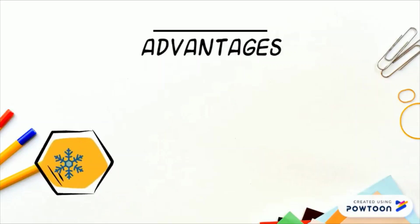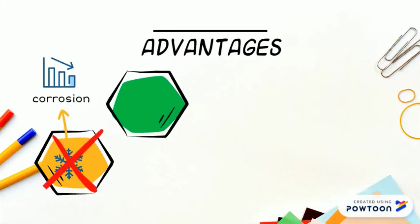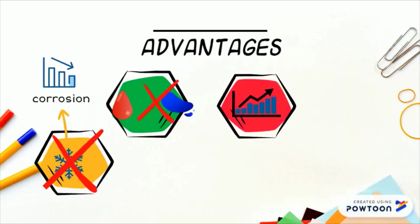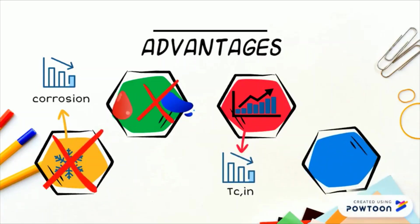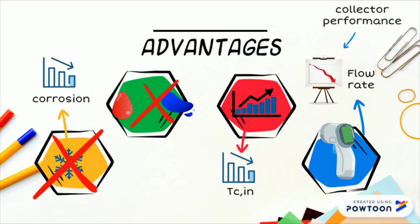Advantages. Problems of freezing and boiling the collectors are eliminated, and corrosion problems are reduced. Compared to flat plate collectors, these eliminate the need to transfer heat from one fluid to another. The high degree of stratification that occurs in the pebble bed leads to lower collector inlet temperatures. It is also possible to operate the collectors at a fixed outlet temperature by varying the flow rate, though when flow rates are low, collector performance is reduced.